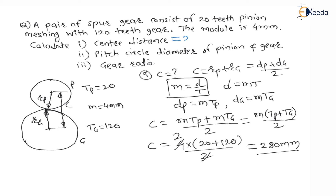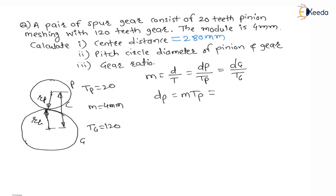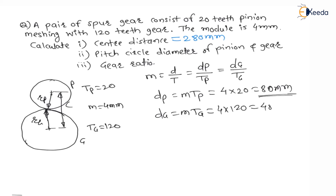The answer for center distance is 280 mm. The second question is to find the pitch circle diameter of pinion and gear. Diameter of pinion = module × T_P = 4 × 20 = 80 mm. Diameter of gear = module × T_G = 4 × 120 = 480 mm.